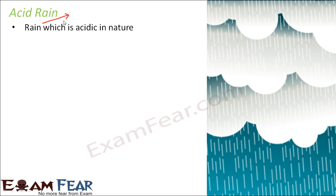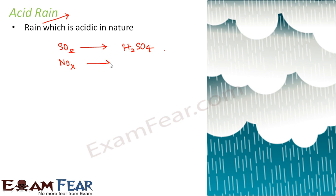How are these acids formed? As mentioned previously, sulfur dioxide and nitrogen oxides react with tiny water droplets present in the atmosphere. Sulfur dioxide gets converted to sulfuric acid or sulfurous acid, and nitrogen oxides react similarly to form nitric acid. Rain from clouds containing these acids falls as a very weak acid — that is acid rain.